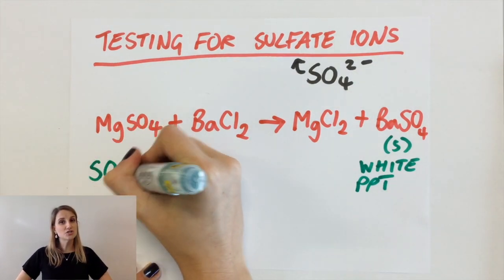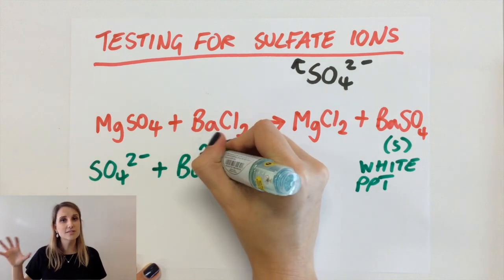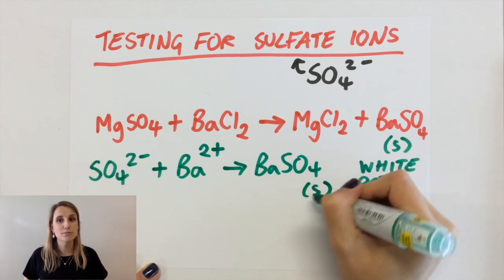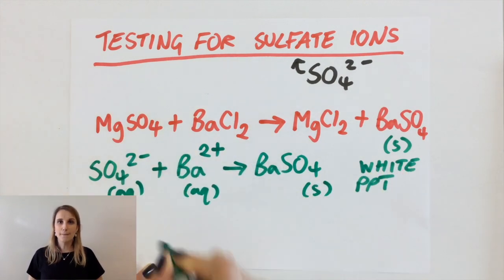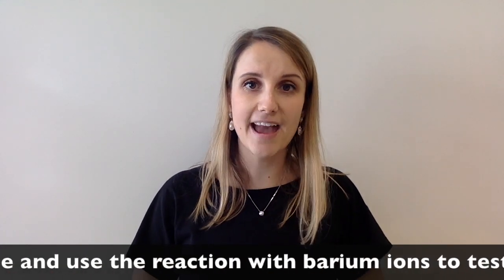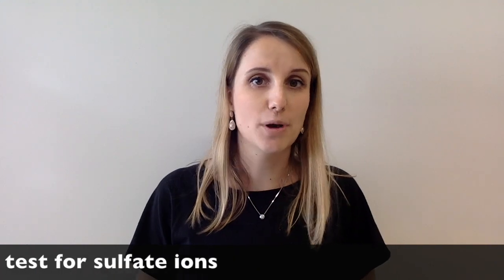If I was to just write this out as an ionic equation, the ions that are really reacting are just the sulfate ion with the barium 2+ ion to give that barium sulfate solid. And that is all for the test for the sulfate ion using barium chloride.